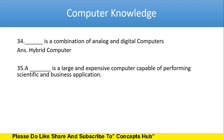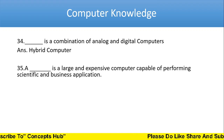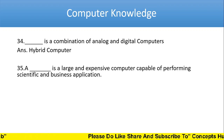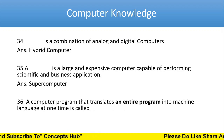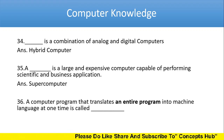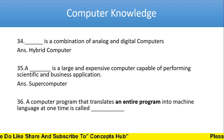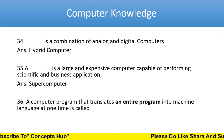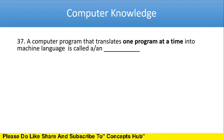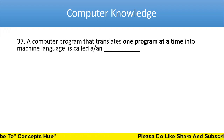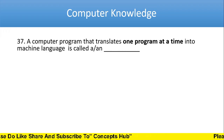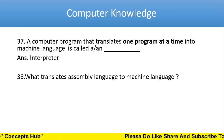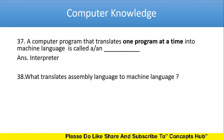Next: a dash is a large and expensive computer capable of performing scientific and business applications. The answer is supercomputer. Next one: a computer program that translates an entire program into machine language at one time is called a compiler. A computer program that translates one program at a time into machine language is called an interpreter.